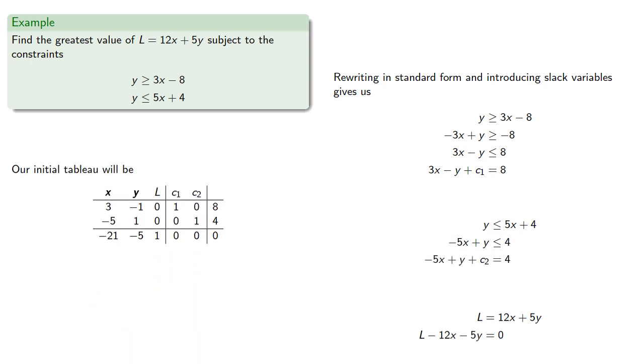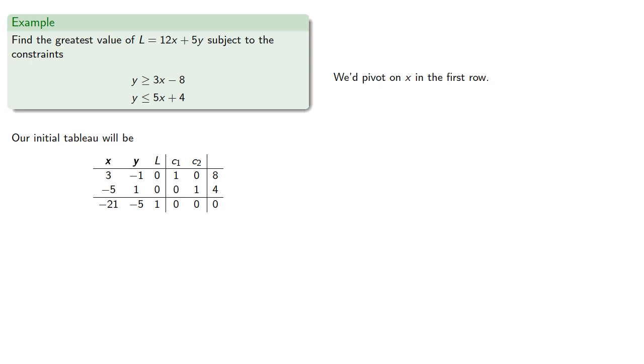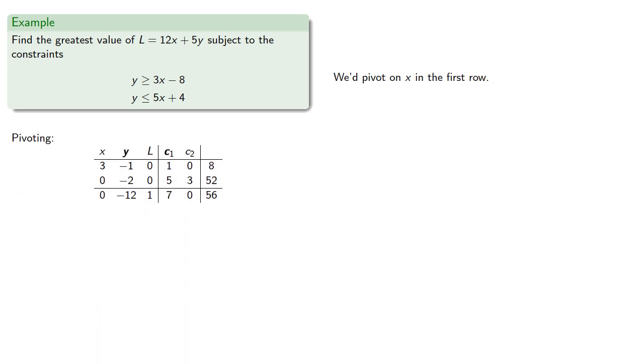Our initial tableau will be, we'd pivot on x in the first row, we'd pivot on y, but all of our quotients are negative. Let's see what this means.